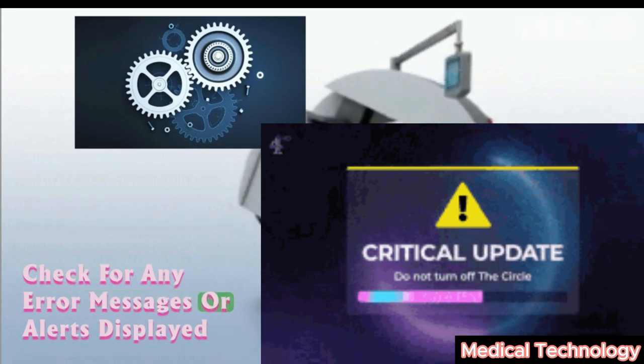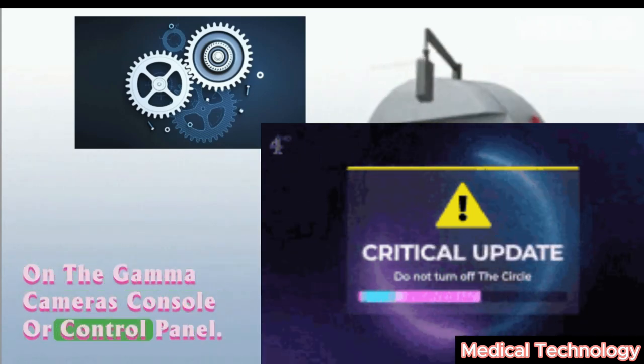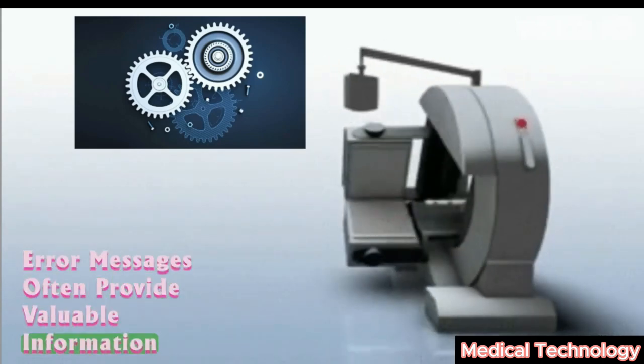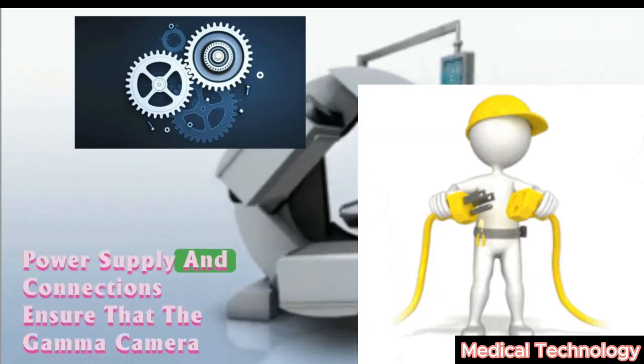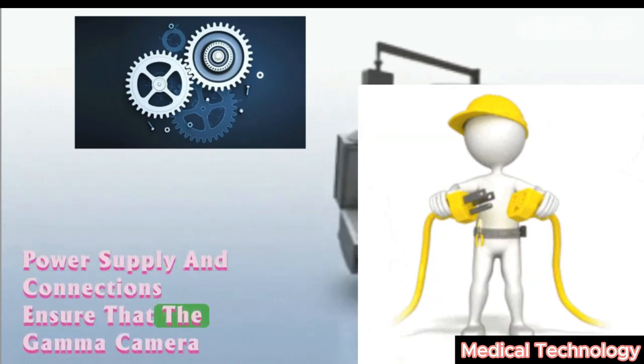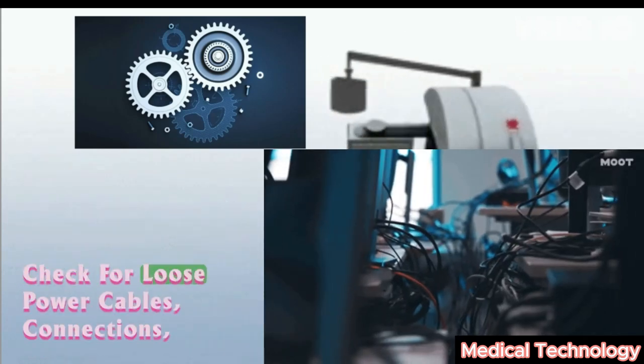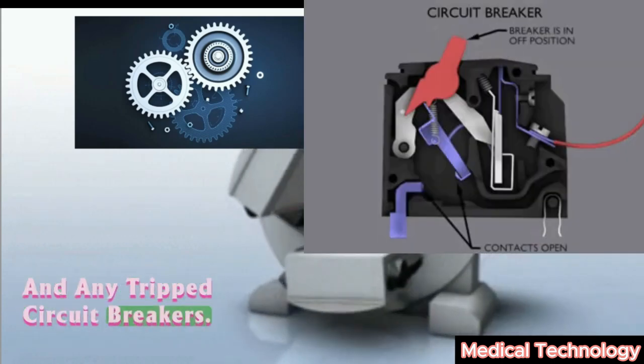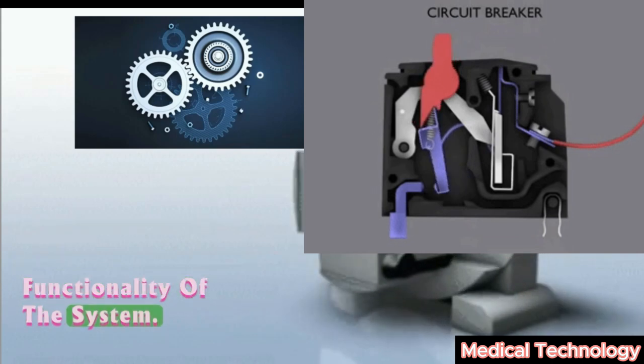Error messages and alerts: Check for any error messages or alerts displayed on the gamma camera's console or control panel. Error messages often provide valuable information about the nature of the problem. Power supply and connections: Ensure that the gamma camera is properly connected to a stable power supply. Check for loose power cables, connections, and any tripped circuit breakers. Power issues can affect the functionality of the system.